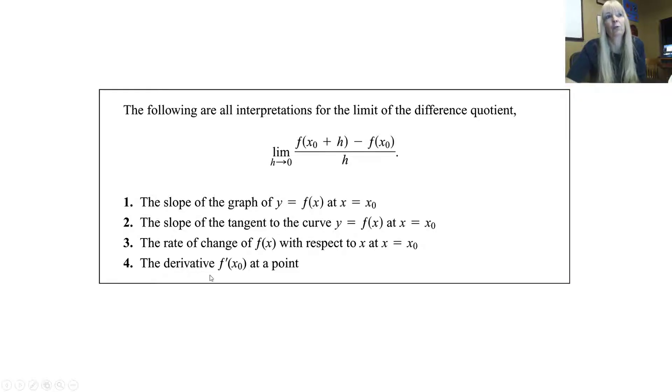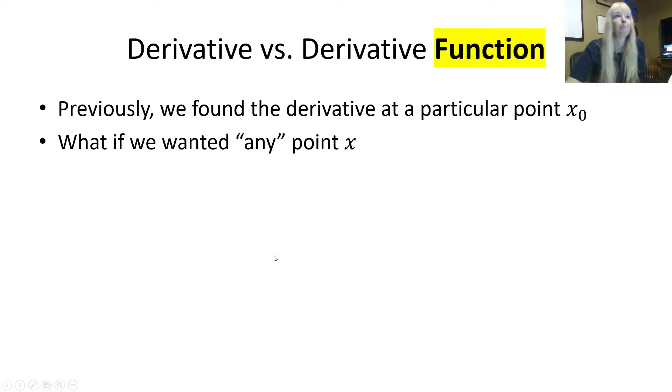This is what we're going to start to use a lot more, the derivative. We're going to ask you to find the derivative. So it says, previously, we found the derivative at a particular point. Again, maybe looking at time equals 1 of the flying toaster, time equals 2, and so on.